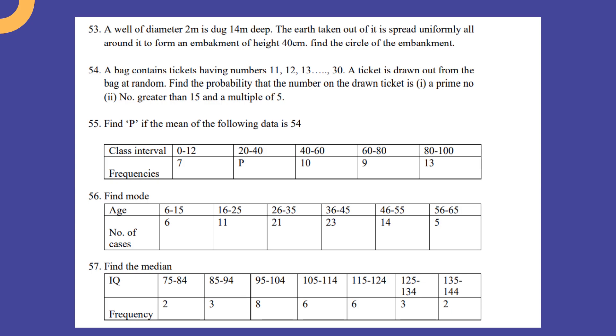Find p if the mean of the following data is 54. Then the data is given here. Then you have to find mode, age is given and the number of cases are given. Then find median, IQ is given and frequency is given.